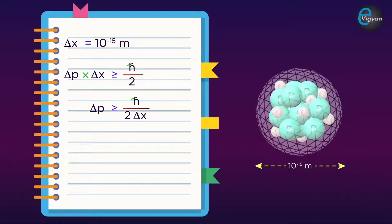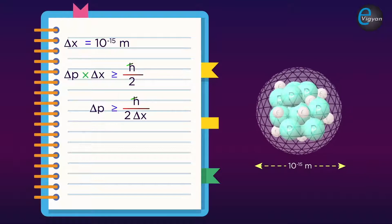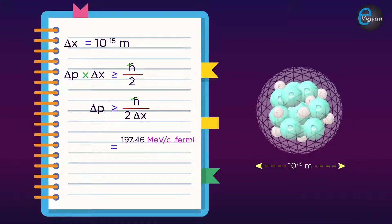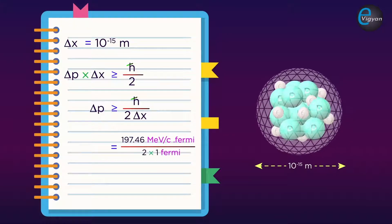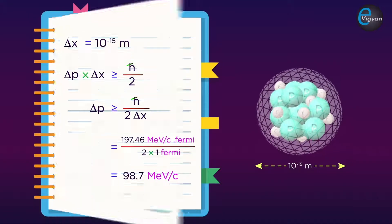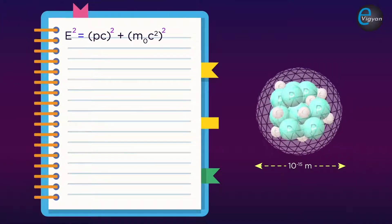That is, Δp is greater than or equal to ℏ upon 2 times Δx, which is equal to 197.46 MeV/c·Fermi upon 2 times 1 Fermi, which comes out to be 98.7 MeV/c.